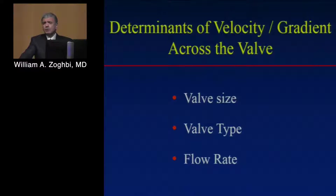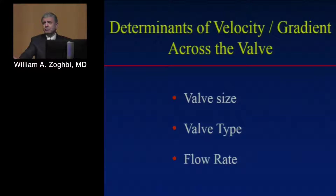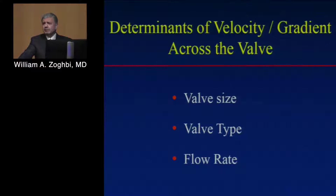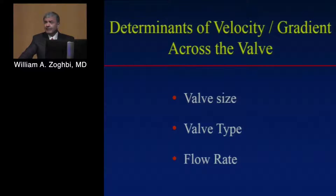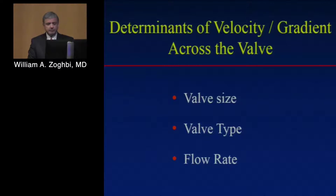I think three major principles should hold for you. One: think about valve size, because the external sewing ring will determine, a priori, what the valve area is for that particular prosthesis. So you know that starting with a valve size of 19 millimeters, the velocity, valve area, and gradient will be much higher than if you have a valve size of 30 millimeters. Two: valve type, which determines the velocity profile and therefore the gradient. Three: flow rate — just like native valves — which determines the gradient across.